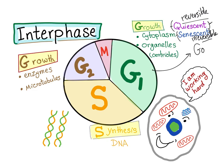So let's say the cell decided to go again and enter the cell cycle to continue. So the S phase — S stands for synthesis, formation, creation. Of what? Of DNA, of course. In the S phase, the DNA itself replicates. Each chromosome now has two sister chromatids, and the DNA has doubled in amount.